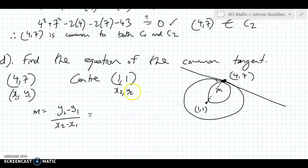So y2 is 1 minus y1 is 7 over x2 is 1 as well, minus 4. So 1 minus 7 is minus 6 over minus 3. And that gives us 2. So m1 equals 2.